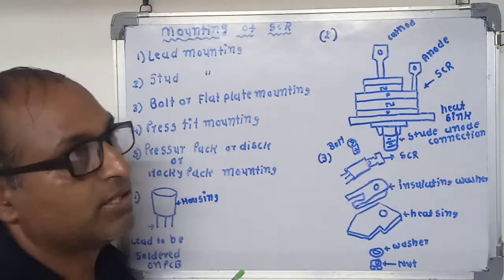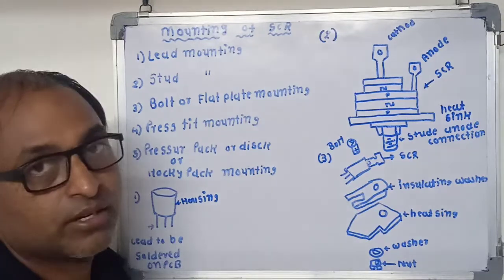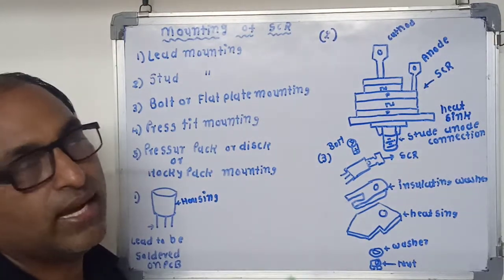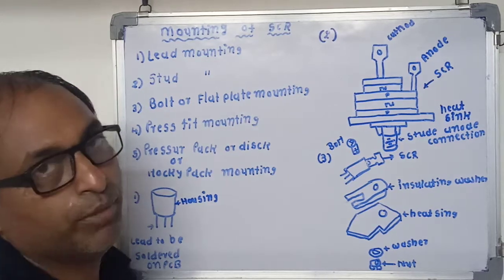Lead mounting. These types of mounting methods are used for low current capacity SCR, approximately up to 1 ampere.